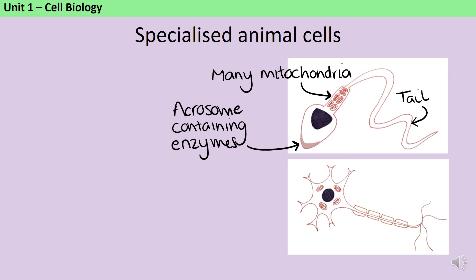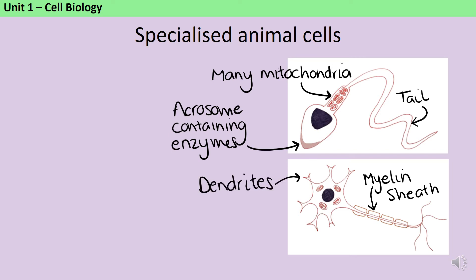A nerve cell, or neuron, is also specialised to its function, but in quite different ways to a sperm cell. Firstly, along its axon there's something called a myelin sheath. Myelin is an electrical insulator, and basically what this means is that the electrical impulse is able to jump from node to node, which speeds up the speed with which that electrical impulse is transferred. The branched dendrites around the cell body of the neuron allow it to interact with lots of different cells, so rather than one nerve cell only being able to join up with a single other one, it can join with hundreds, and so one impulse can be propagated across the whole neural network. Like the sperm cell, the neuron also has a lot of mitochondria, because it needs a lot of energy in order to transfer those electrical impulses.